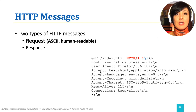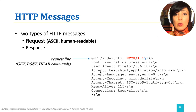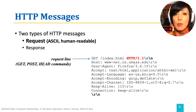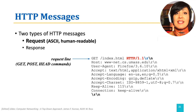The first line is called the request line. It contains three fields: the method field, which is GET here; the HTTP version, which is 1.1 in this example; and the URL, which is /index.html.